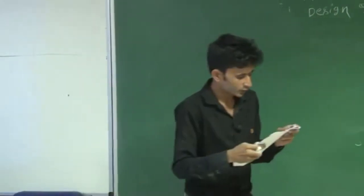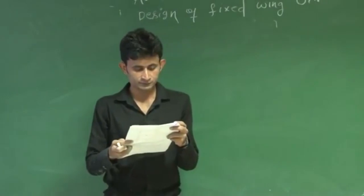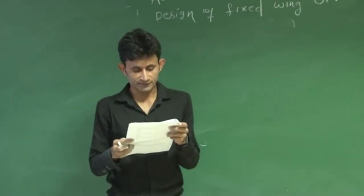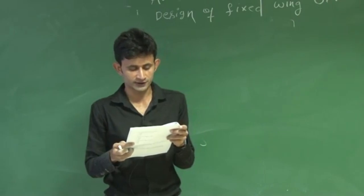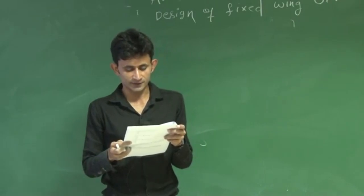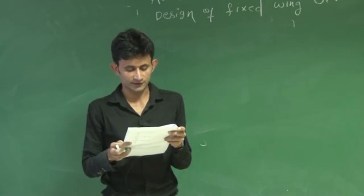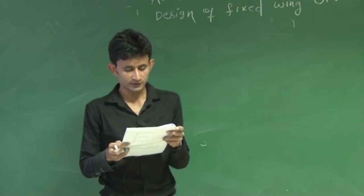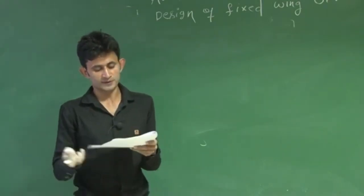In assignment 3, the question was: a UAV has a weight of 7500 Newton and lift-to-drag ratio of 13, wing span is 15 meter and mean aerodynamic chord of 1 meter. It is flying at a speed of 35 meter per second at mean sea level. The lift coefficient at cruise will be?